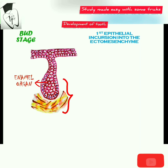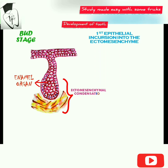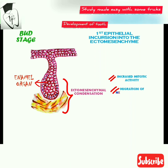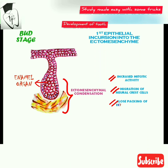The enamel organ will give rise to enamel, and that's why it is called so. The ectomesenchymal condensation forms because of increased mitotic activity and the migration of neural crest cells into this area. The ectomesenchymal cells surrounding the tooth bud condense and are closely packed.